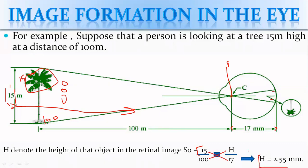This equals 15 divided by 100 times 17, which equals 2.55 mm. This particular object, which will be the image size of 2.5 mm, will be defined as the retinal image, and the brain processes this image.